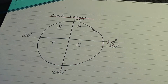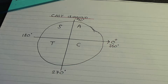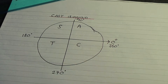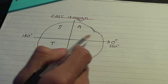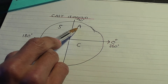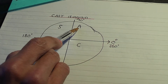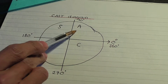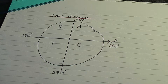We'll be using that fairly soon when we go through some examples. But let me briefly give you the idea behind this CAST diagram — why did I label it A, S, T and C? Well, in the all quadrant — we call this A, meaning all — so in the first quadrant, sine, cos and tan are all positive.